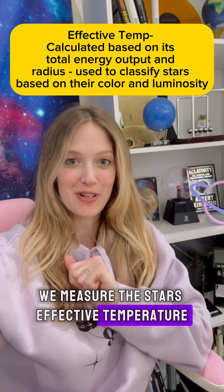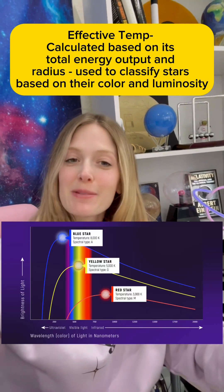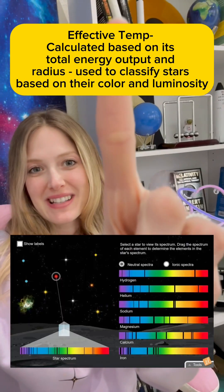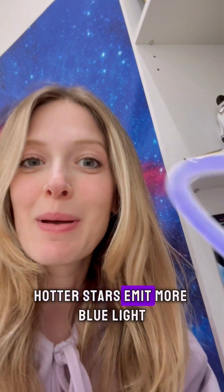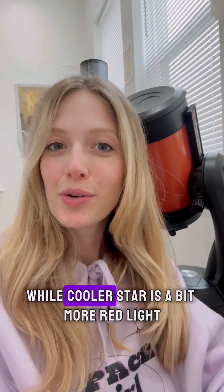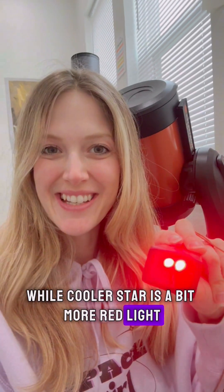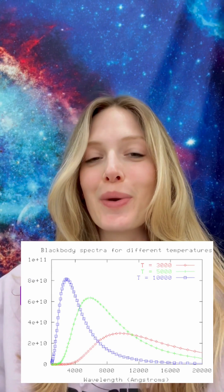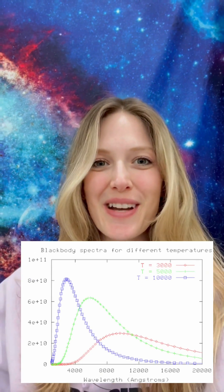We measure the star's effective temperature. It's figured out by analyzing its spectrum, which is like a unique fingerprint of light. Hotter stars emit more blue light, while cooler stars emit more red light. By comparing a star's light to theoretical models, we can estimate the star's surface temperature.